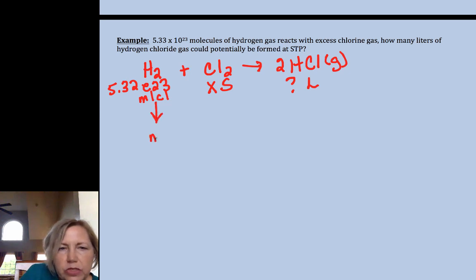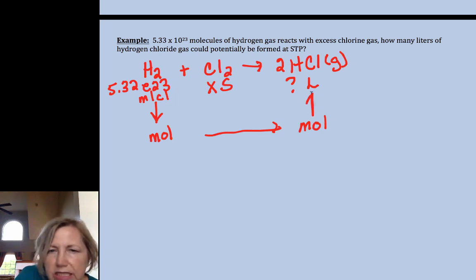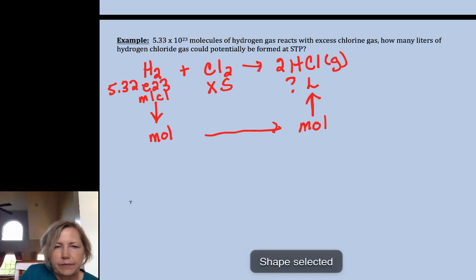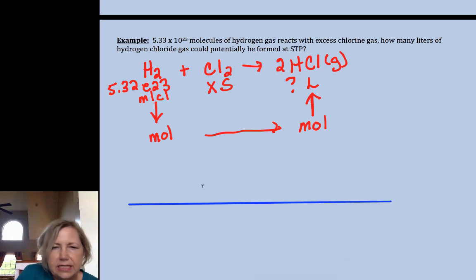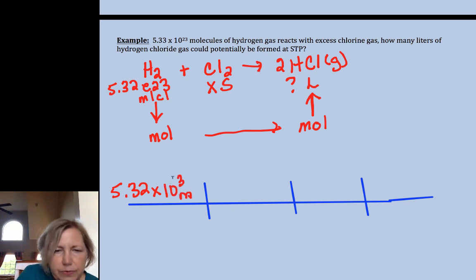We've got to get molecules to moles, moles to moles, and moles to liters. Three steps. So 5.32 times 10 to the 23rd molecules, I missed my two there, molecules of hydrogen. You want to label, especially when you're going from one substance to another substance. I want to get rid of molecules and I want moles. Molecules are something I can count, a particle, so that's where Avogadro's number goes.